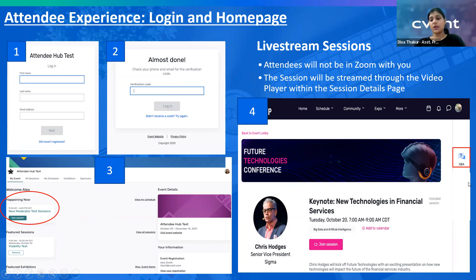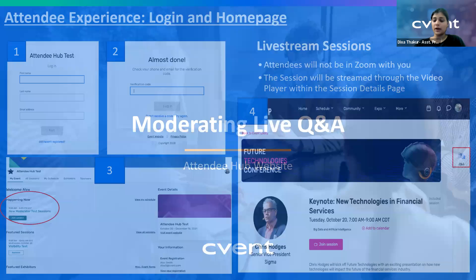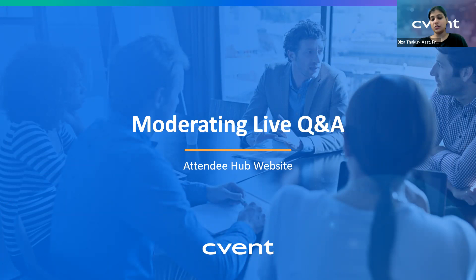Once you have logged in successfully, locate your session — you can go to 'all sessions' or find it in 'happening now.' Click on the session name instead of the join session button. On the right-hand corner is where you'll find the Q&A, poll, and chat options. As an attendee, they follow the same login process, but the system knows when you log in as a moderator because you're already designated as such. When you as a moderator click on Q&A, you'll see additional moderation options.